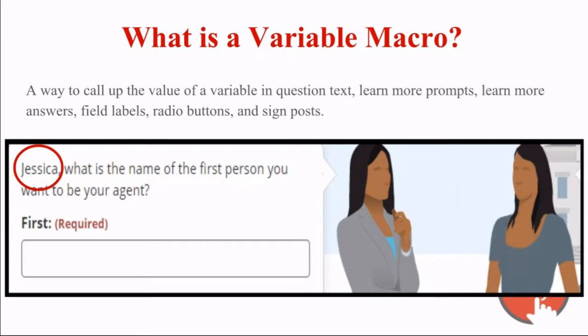Here is an example of the most common way that a macro is used — calling out the end user's name. You've asked them in one of the beginning questions what their name is, then use that information later on. For example, I've used a macro to call out Jessica: 'Jessica, what is the name of the first person you want to be your agent?' It's just a way to add that extra level of personalization for your end user.